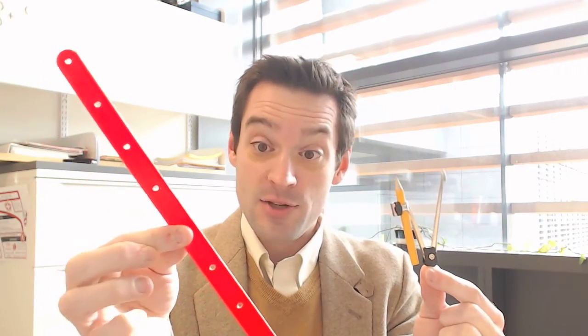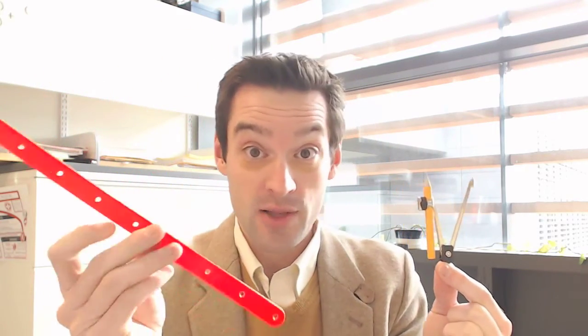Those are the numbers, the lengths if you will, that we can construct using just one of these, a compass, and one of these, a straight edge. Notice this is a straight edge. It doesn't have any markers on it. It's not a ruler.